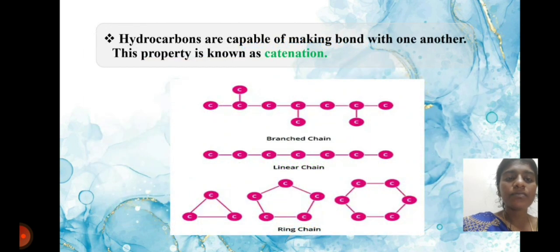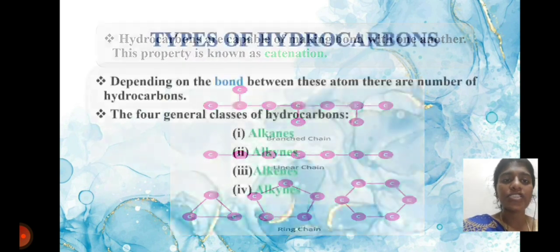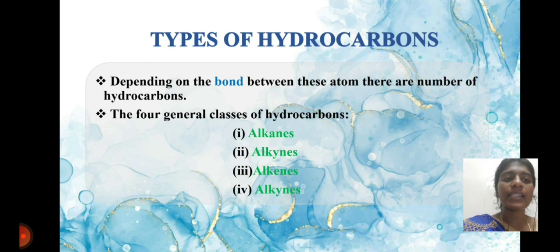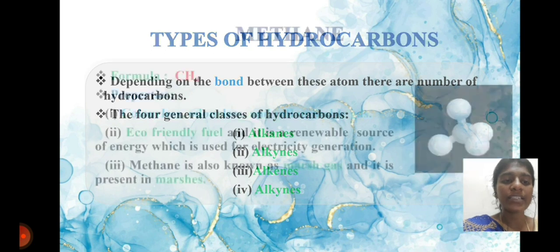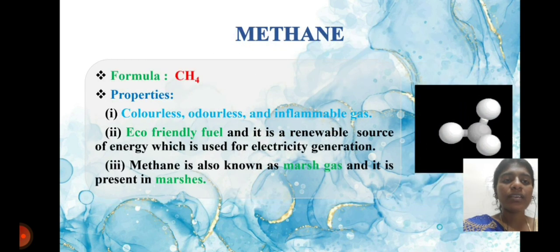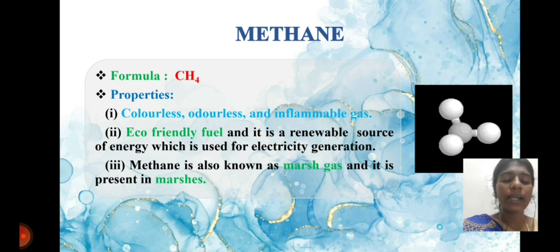Hydrocarbons are capable of making bonds with one another — this property is called catenation. The types of hydrocarbons: there are four types — alkanes, alkenes, and arenes. First, we will look at methane.